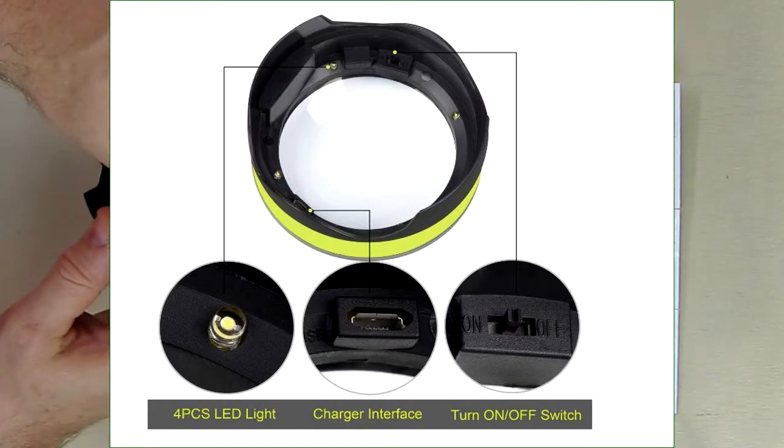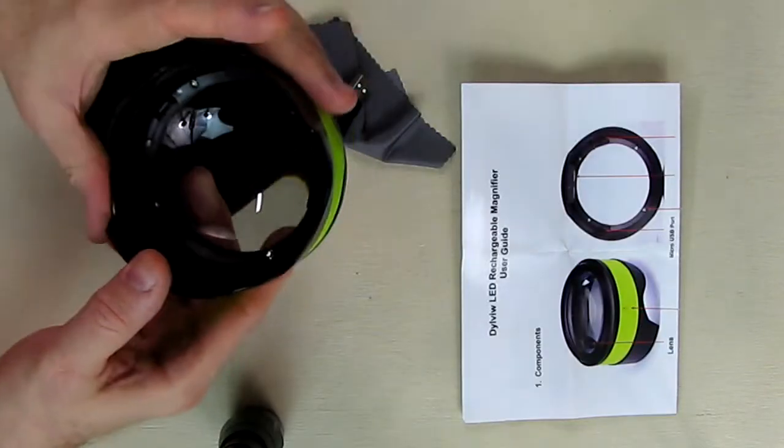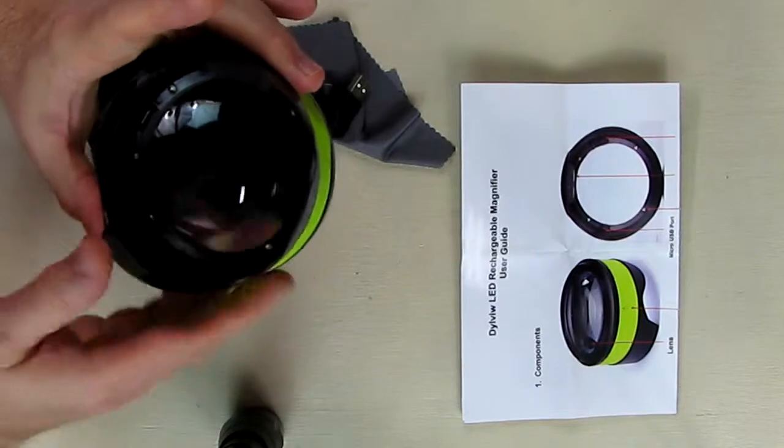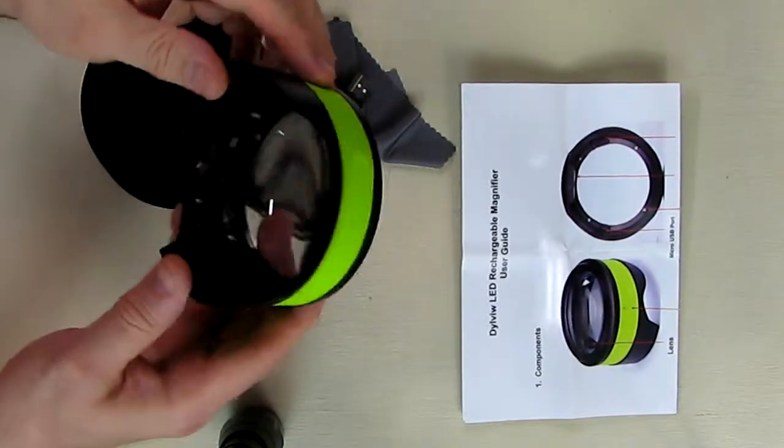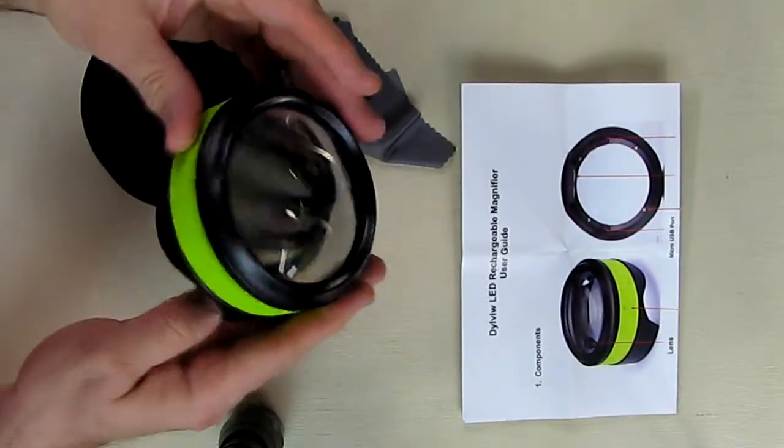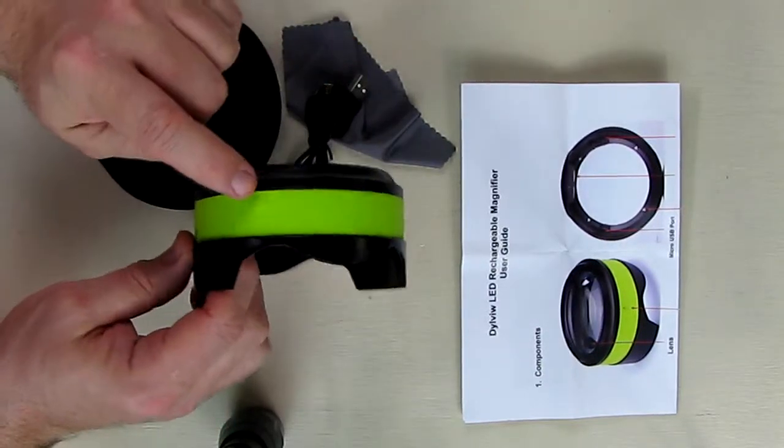So first thing you want to do is turn that switch to the on position, and you want to turn this off when you're not using it so it doesn't discharge the batteries. Internally inside here are rechargeable batteries.